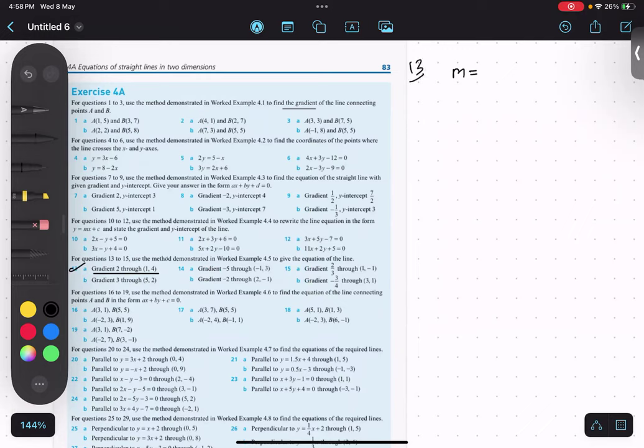M value is two and it is going through a point one comma four.